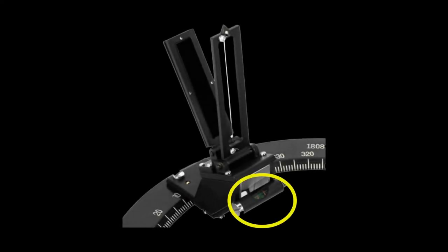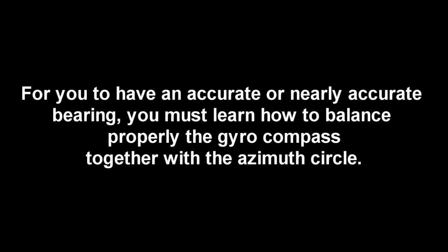Try to look at the picture. Notice the part of the azimuth circle encircled with yellow — that is the bubble, called the spirit level. There are two spirit levels in an azimuth circle, and they are used to level the instrument. For you to have an accurate bearing, you must learn how to balance properly the gyro compass together with the azimuth circle. Once the bubble stays on the center, take immediately the bearing of the sun, and at the same time, press your timer.